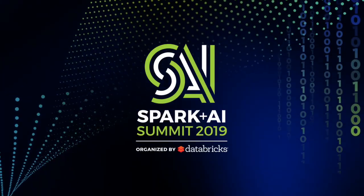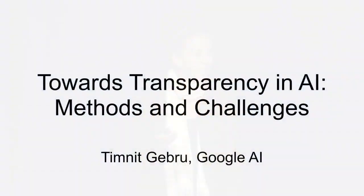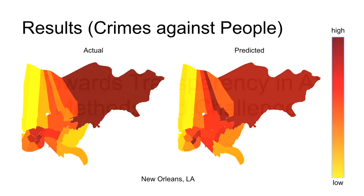Hi everybody. So I want to tell you a little bit of a story today. When I was a PhD student at Stanford, I was very excited about predicting things from images. My specialty is in computer vision, so we were very excited about using publicly available images to predict certain things.